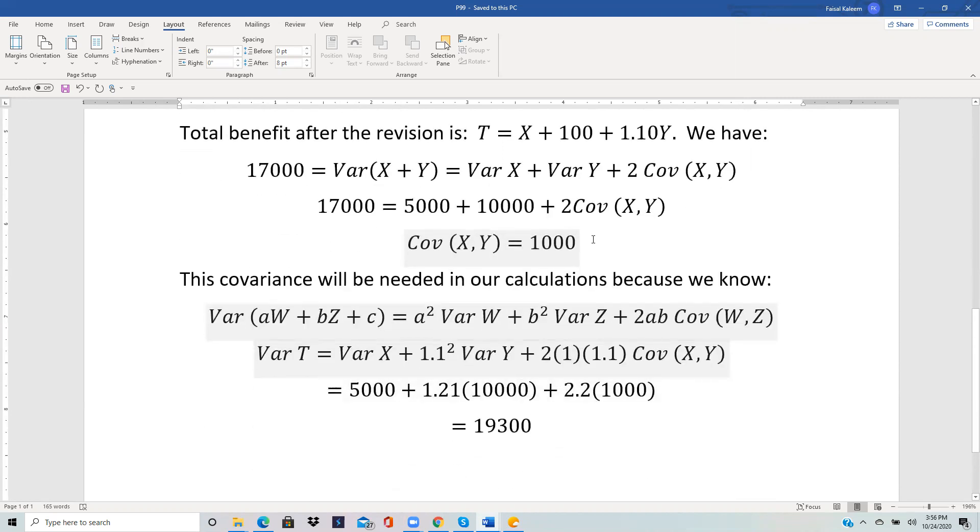So now we return to the variance of T. That will be variance of X plus 1.1 squared variance of Y plus 2 times 1 times 1.1 covariance XY, according to this formula.